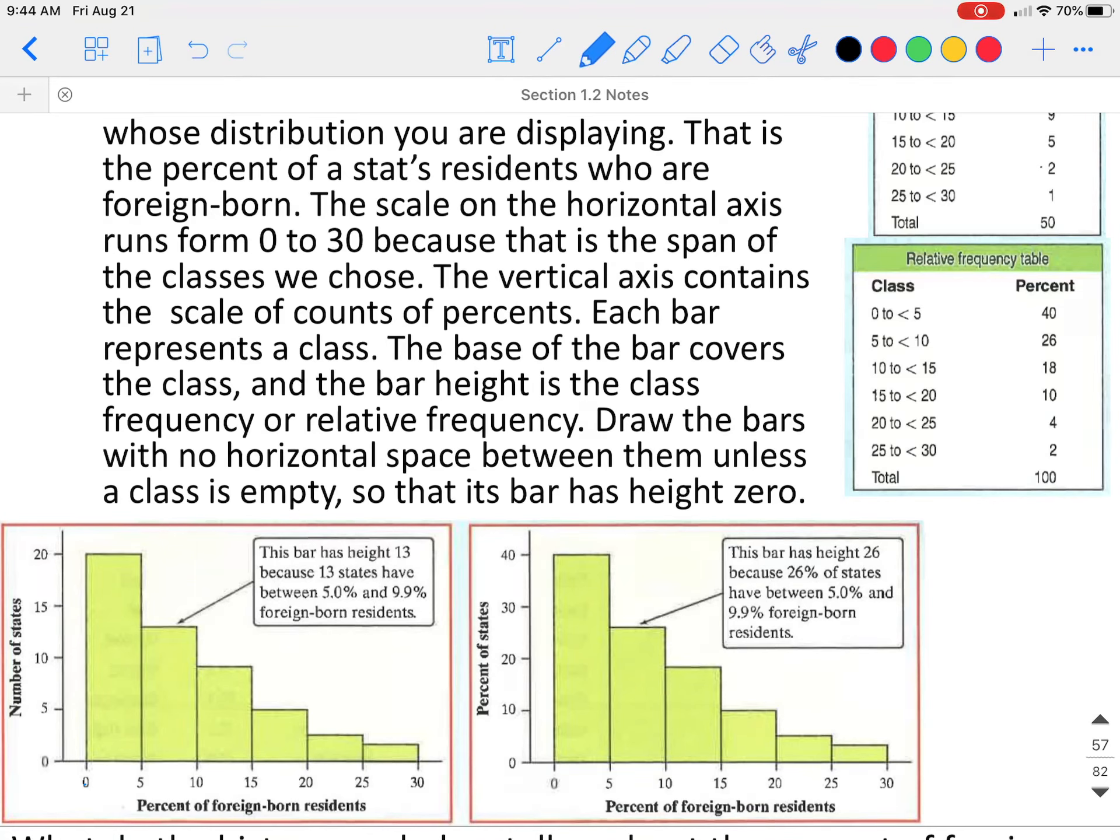When you make a histogram, you need to make the bar go the full width of your class. So our first class goes from 0 over to just before 5. So the bar goes that entire width. On a histogram, the bars touch as long as there is not a class that does not have any data values.